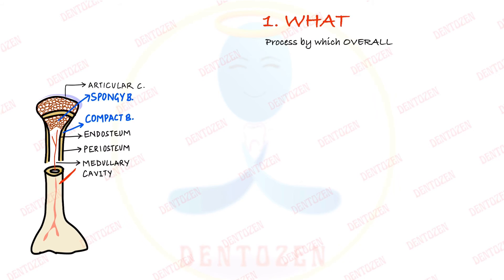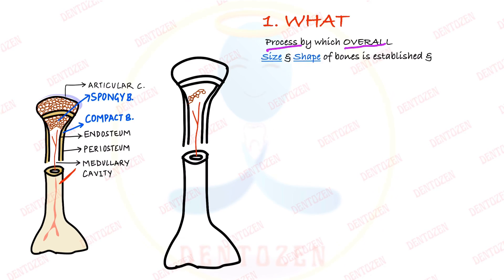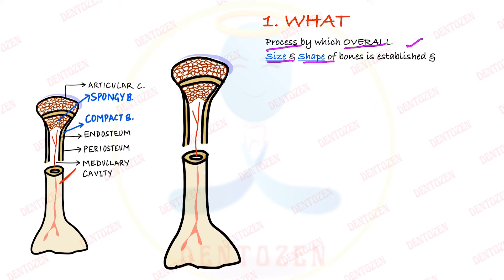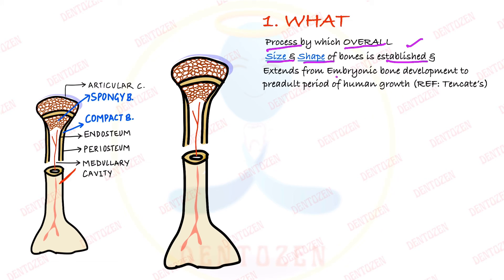Bone remodeling is a process by which the overall size and shape of our bones is established in the adult skeleton. It happens from embryonic bone development through the pre-adult period of human growth, with both formation and resorption occurring simultaneously.